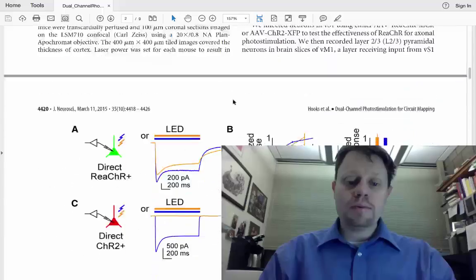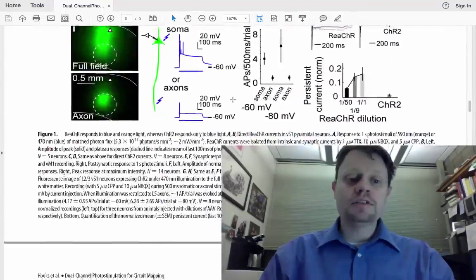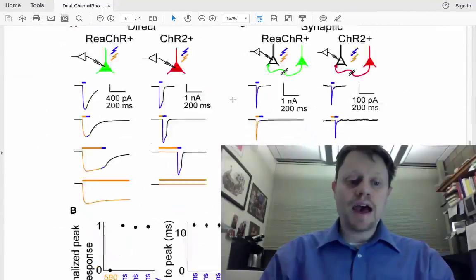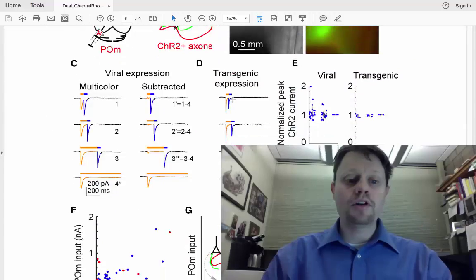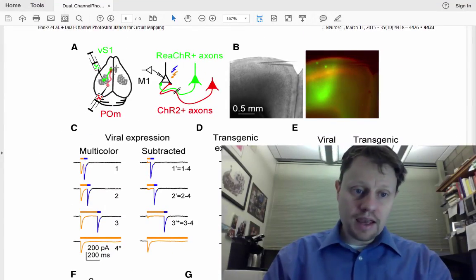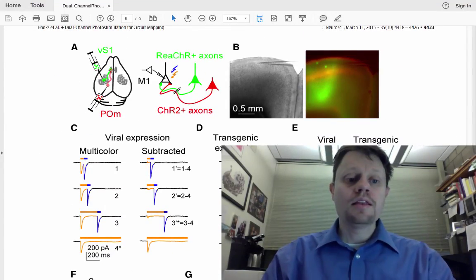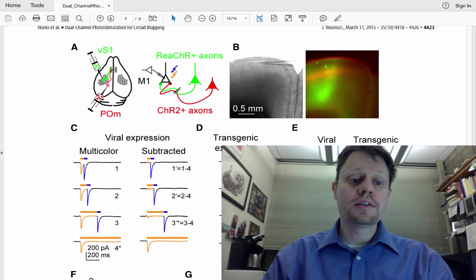Throughout the course of the paper what they end up discovering is that in primary motor cortex, this area up here, there are inputs that arrive from both somatosensory cortex, which is the sensory area a little bit further back in the brain here, as well as a deeper structure called the thalamus, in particular a sub-region of the thalamus called POM.